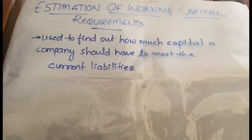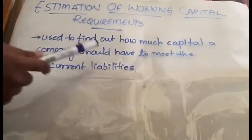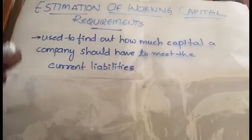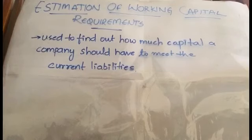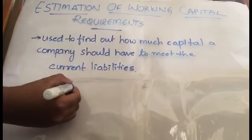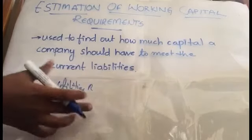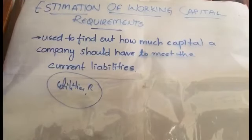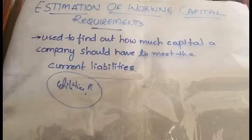Before explaining that, I will tell you why we have to do this. It is used to find out how much capital a company should have to meet the current liabilities. Current liabilities are those things which we have to pay every month, like utility bills, rents — the expenses that a company will have every month or every year. In order to meet these current liabilities, how much capital a company or an industry should have — to calculate that, we have to do this estimation of working capital requirements.